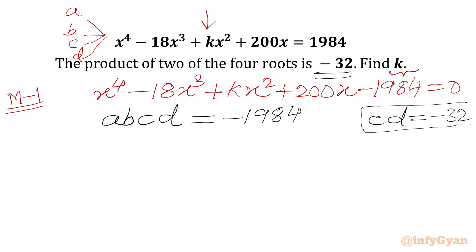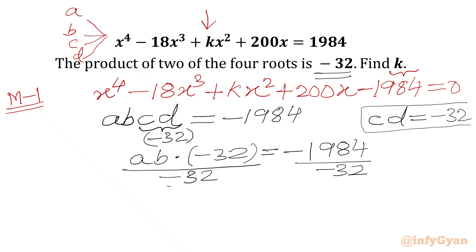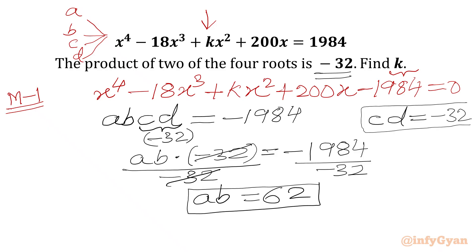Since cd equals minus 32, in place of c times d we write minus 32. So ab times minus 32 equals minus 1984. Dividing both sides by minus 32, we can calculate ab. So ab equals 62.